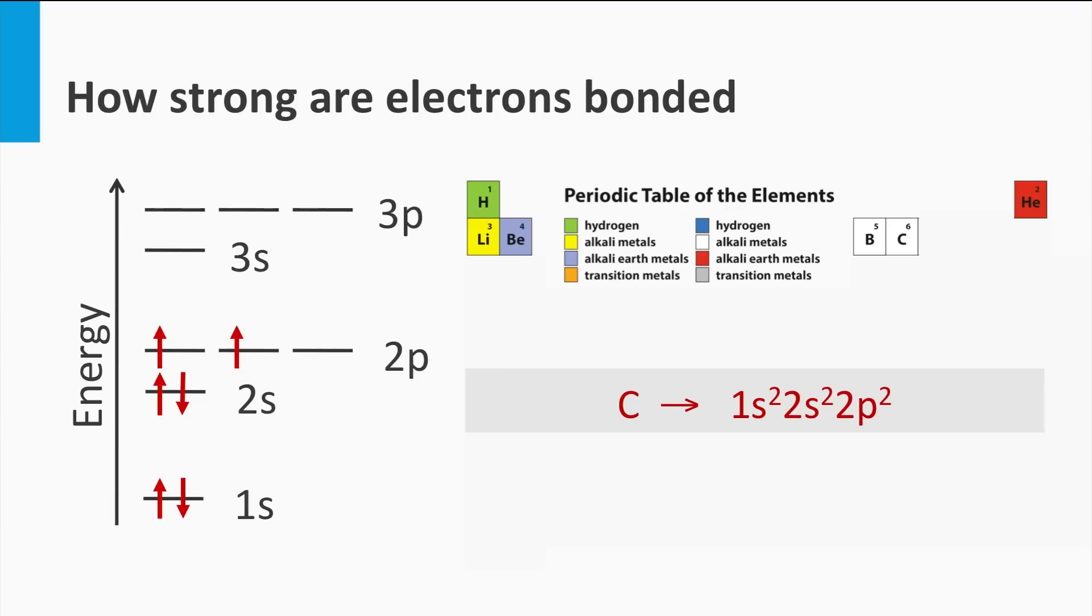So basically, carbon has its second shell not fully filled. As we discuss in the next block, the electrons in the not fully filled outer shell are responsible for making the bond with other atoms in molecules or solids. As carbon has four electrons available in the not fully filled shell, carbon can make four covalent bonds, like in methane gas or in diamond.